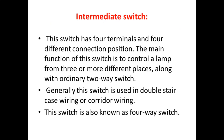Next is the intermediate switch. This switch has four terminals and four different connection positions. The main function of this switch is to control a lamp from three or more different places along with an ordinary two-way switch. Generally this switch is used in double staircase wiring or corridor wiring. This switch is also known as a four-way switch.